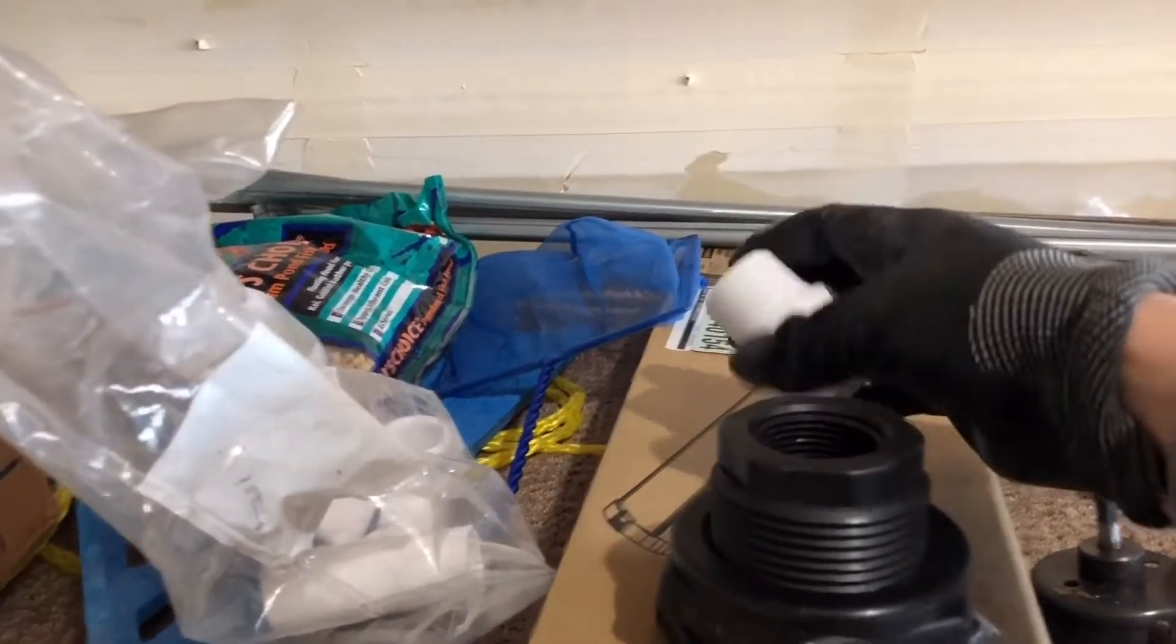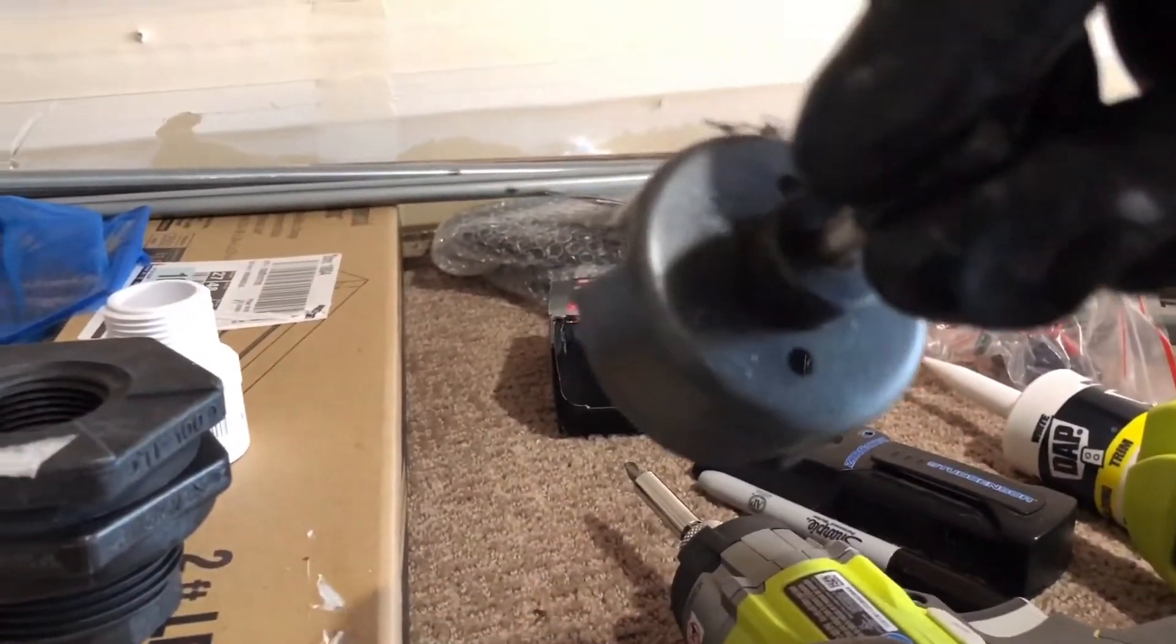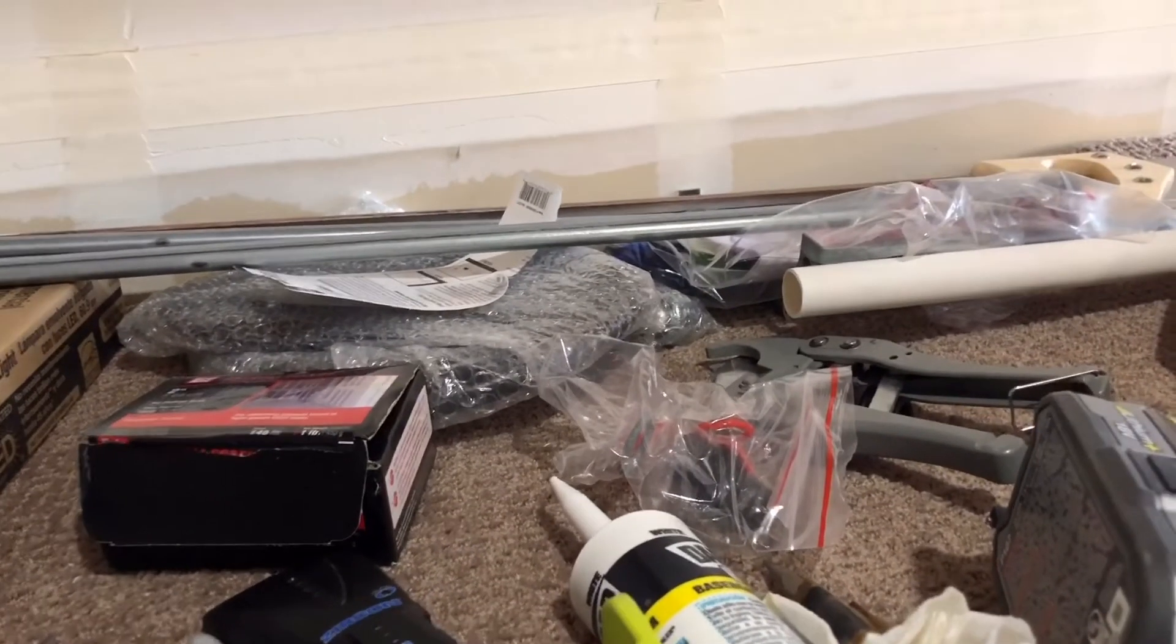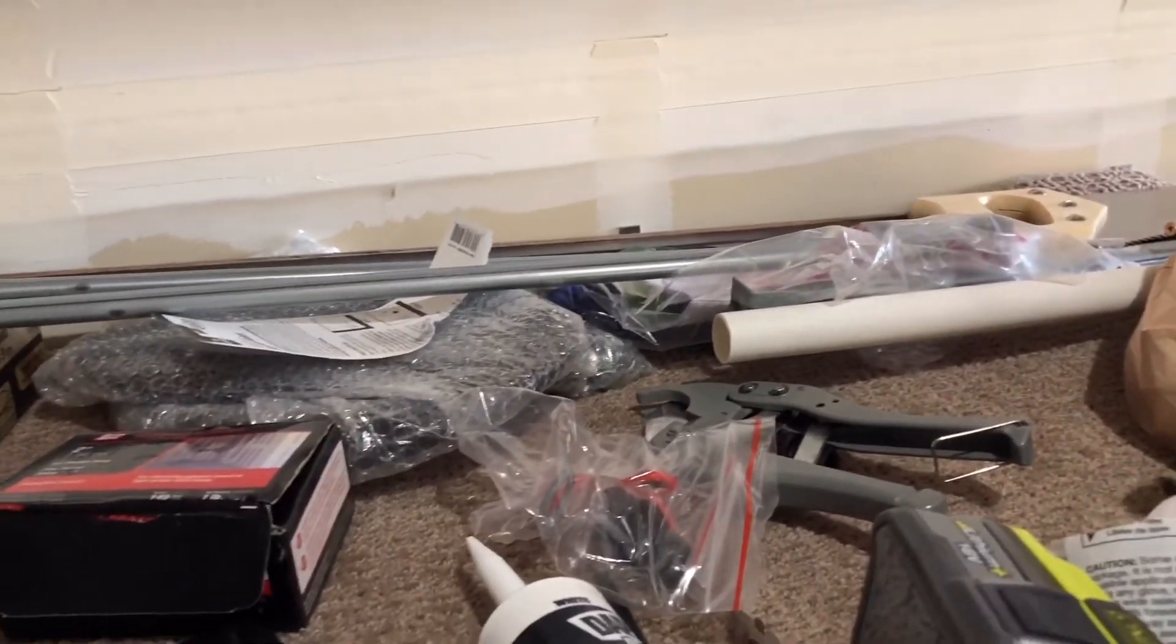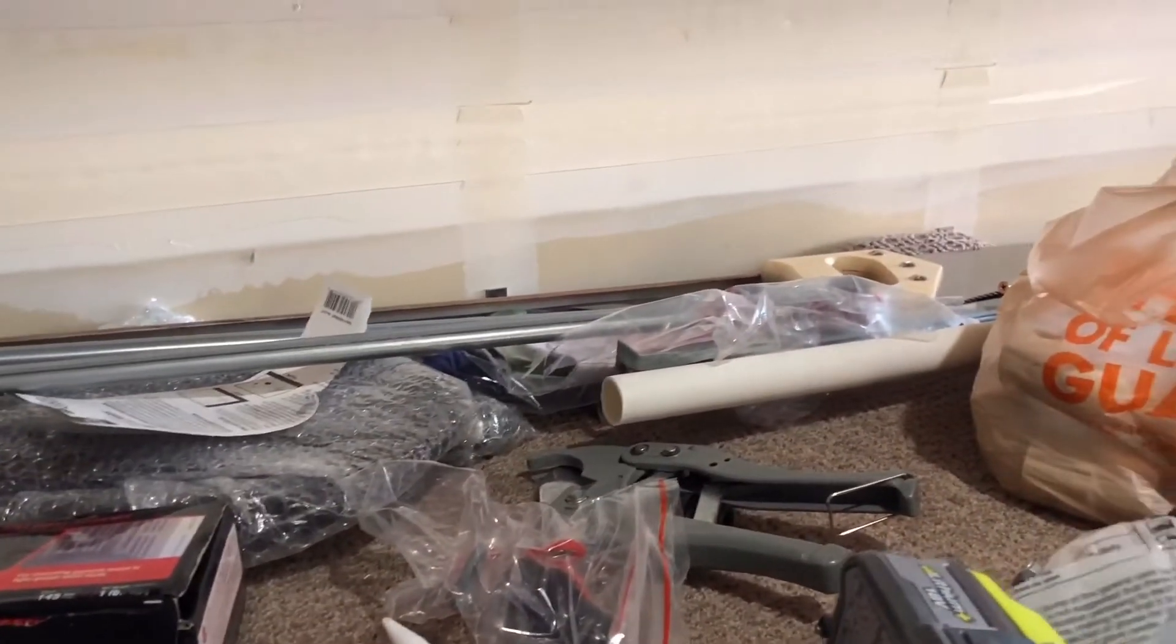So all you need to get this into the aquaponic system is it's going to go right there. I need a two and one quarter inch hole saw. I'll also link to that in the show notes. This is a pretty cheap one off Amazon. It's just cutting through plastic, so it doesn't need to be too strong. But we'll go ahead and make that cut.